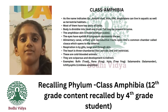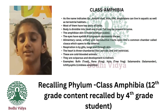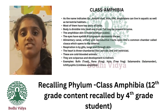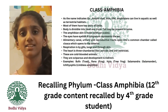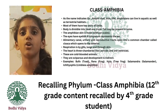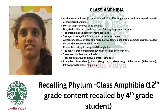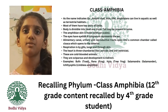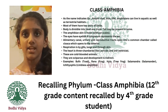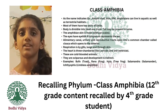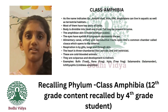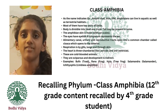Number 5: Alimentary canal, urinary, and reproductive tracts open into a common chamber called cloaca, which opens to the exterior. Number 6: Respiration is by gills, lungs, and through skin. Number 7: The heart is three-chambered — two atria and one ventricle.